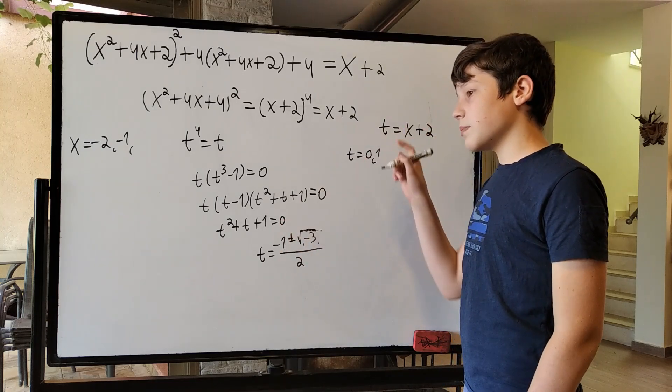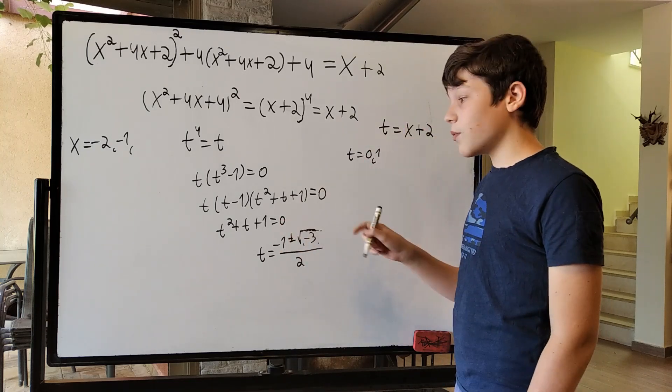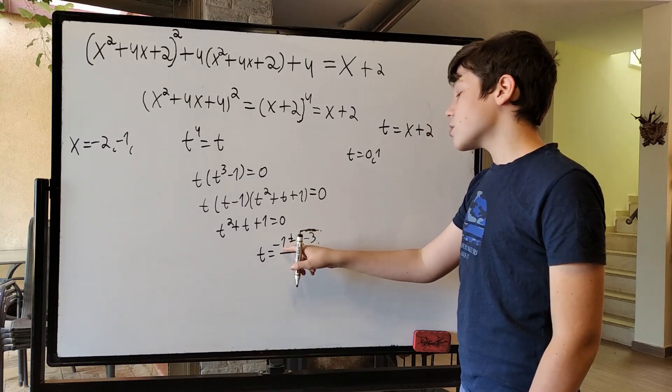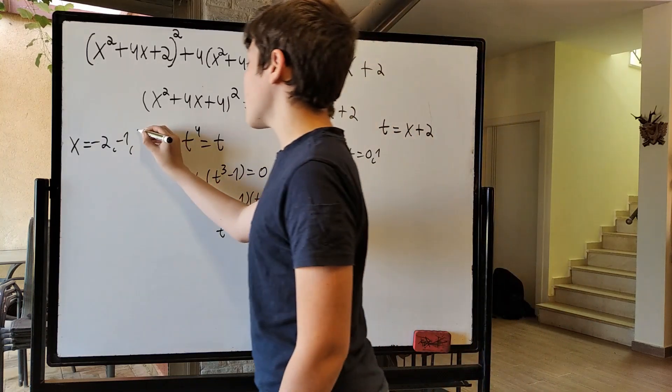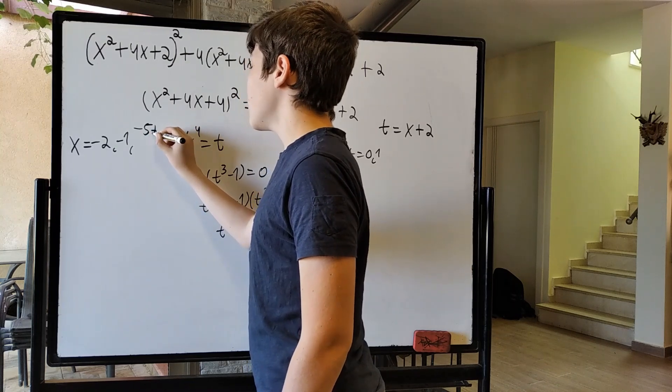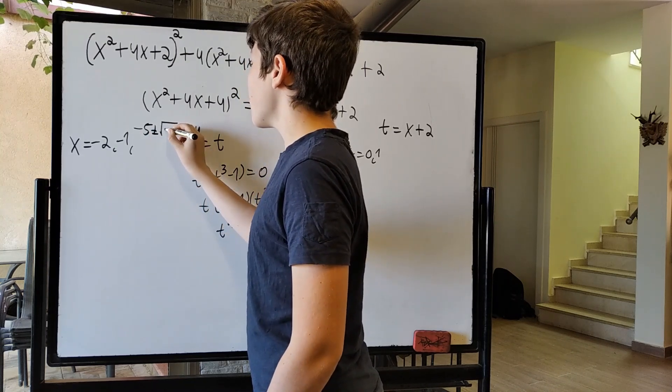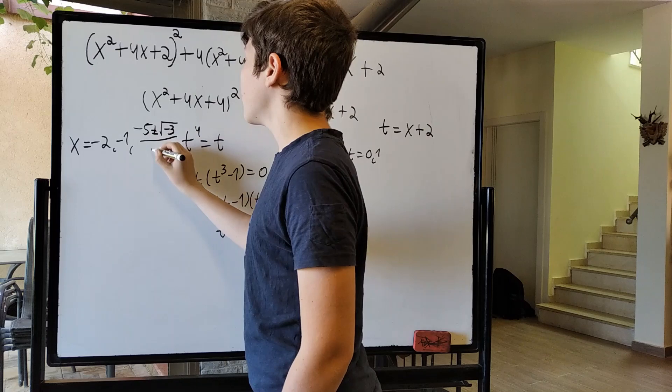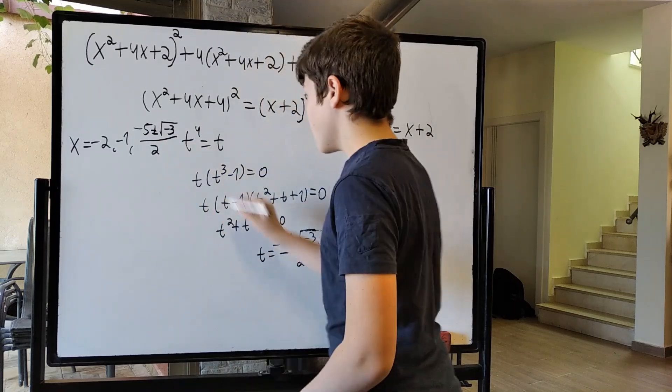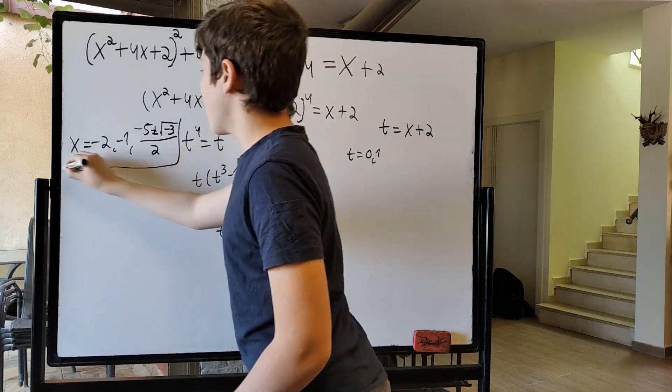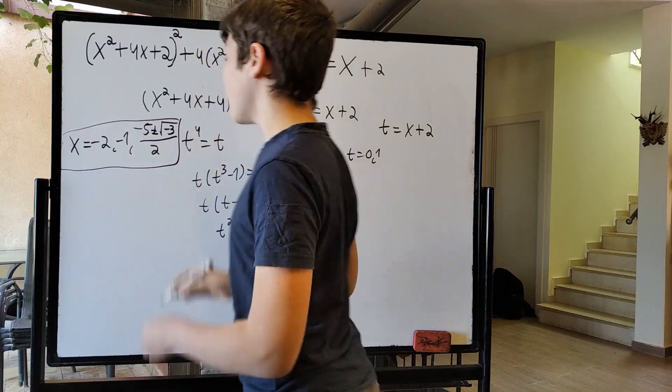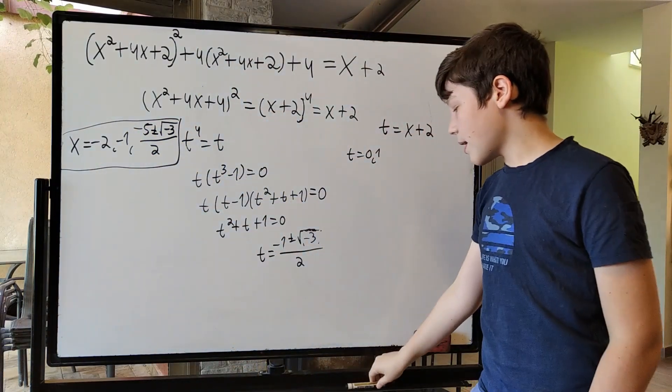...minus 1 times 4, minus 5. So, this minus 1 simply becomes minus 5. So, this is minus 5 plus minus the square root of negative 3 over 2. And those are final solutions for x.